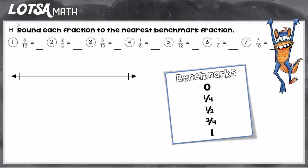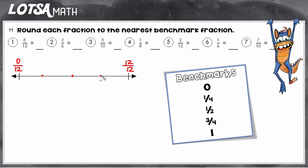For number one, we have eight-twelfths. I have this number line here, and I'm going to imagine that I broke it into 12 pieces. So I know at the beginning I would have zero-twelfths, and at the end I would have twelve-twelfths. Now I'm just going to make a little dot on the number line to show where half would be, and the fourths would be half of the halves. So right in the middle of the first half would be the first fourth, and the middle of the back half would be the third fourth. I just have these little dots to remind me where the benchmark fractions are.